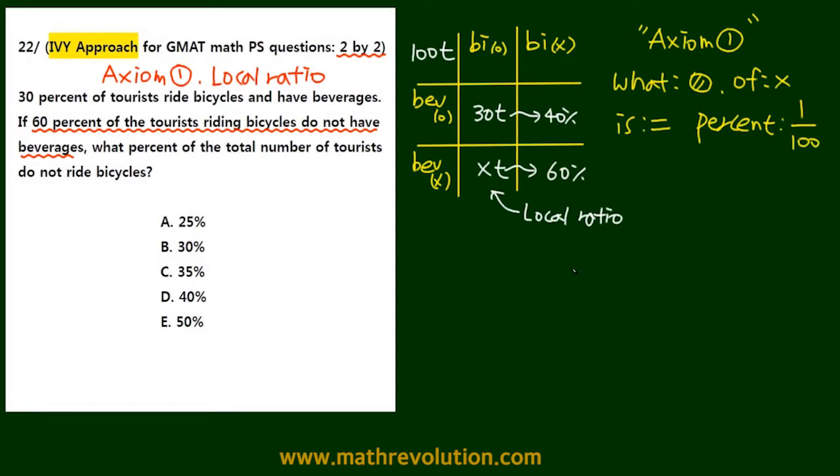So how do we get this? 30T to XT equals 40% to 60%. So we can get the value of X. So 30T to X equals 2 to 3. And if we compare the inner products and the outer products, 2X is 90 and X equals 45.